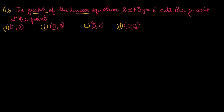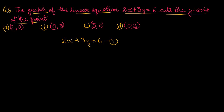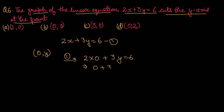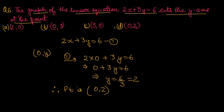Question number 6: the graph of the linear equation 2x plus 3y equals to 6 cuts the y-axis at the point? जब graph y-axis को cut करेगा, तो वो point (0, y) होगा। इसको first equation में fit करते हैं: 2 into 0 plus 3y equals to 6, तो 3y equals to 6 और y की value 2 आगई। तो वो point है (0, 2)। Option number D is the right one.